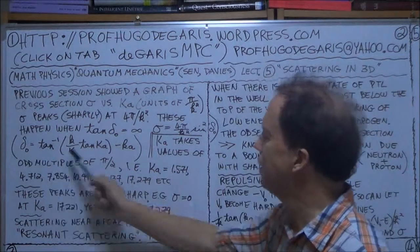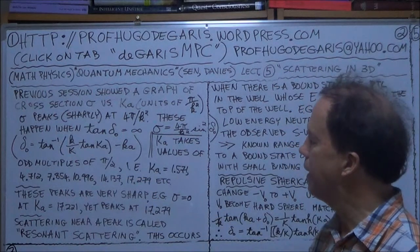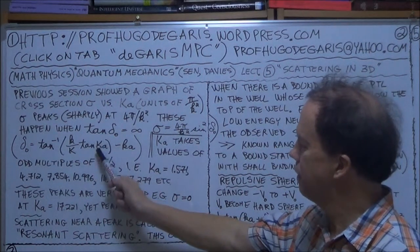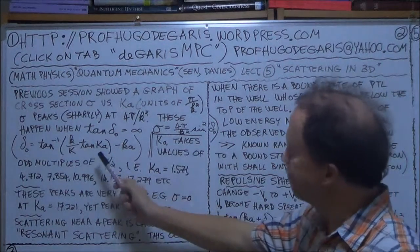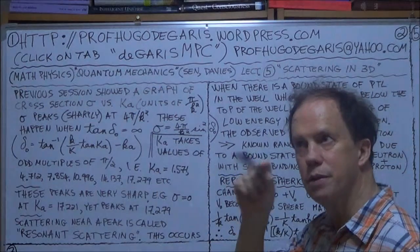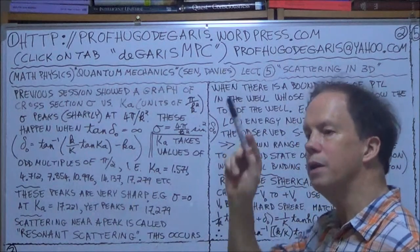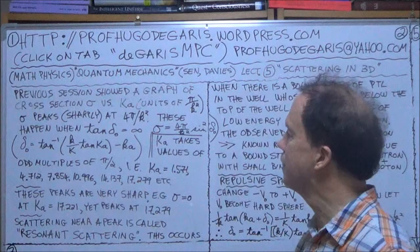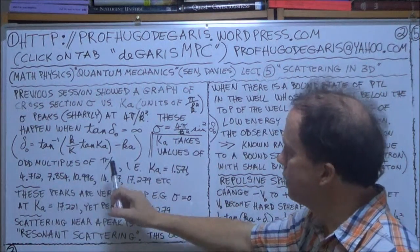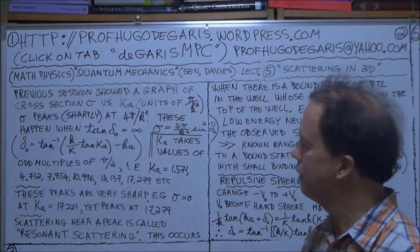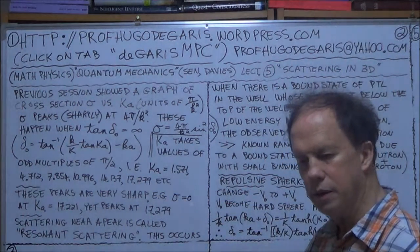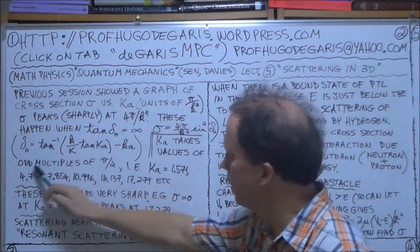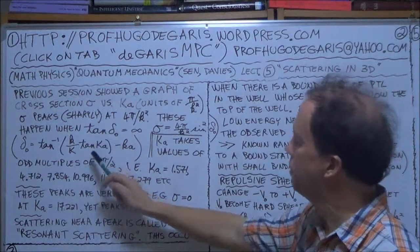Now, here's another formula relating delta to your Ka. This big Ka, the tangent of big Ka can go to infinity. When does the tangent, the tangent of what angle gives you infinity? Well, pi over 2, 90 degrees, tangent of 90 degrees gives you infinity. So if big Ka here is odd multiples of pi over 2, you get infinity here.